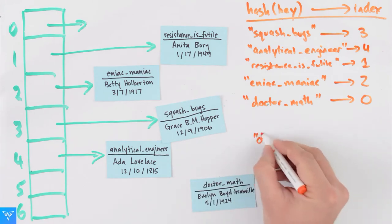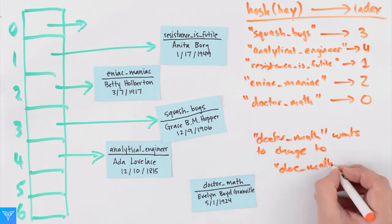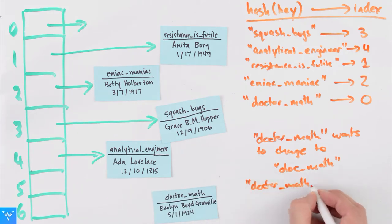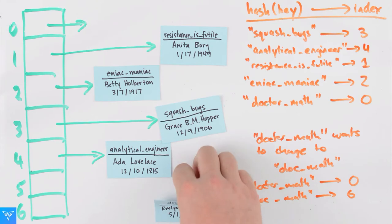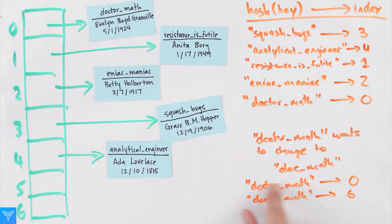If Dr. Math wanted to change her username, say to Doc Math, this would be a problem because the hash of Dr. Math isn't necessarily the same as the hash of Doc Math. The best we could do is create a new user, Doc Math, and copy all the information over. We can't change the keys because it's an integral part of how the hash table looks up the user.